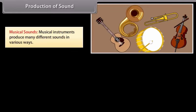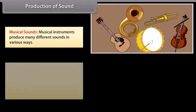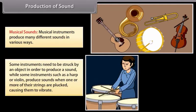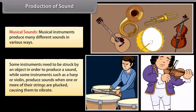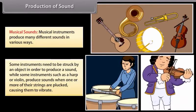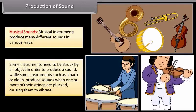Musical sounds: Musical instruments produce many different sounds in various ways. Some instruments need to be struck by an object in order to produce a sound, while some instruments such as a harp or a violin produce sounds when one or more of their strings are plucked, causing them to vibrate.